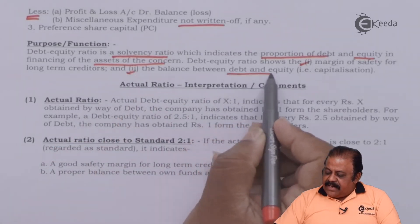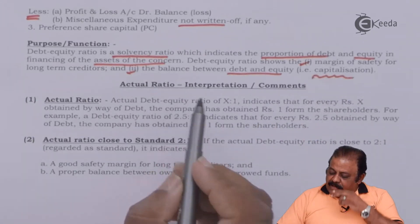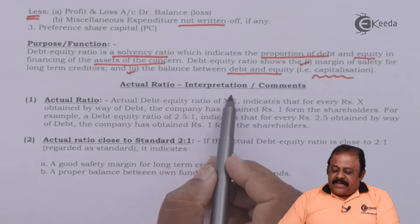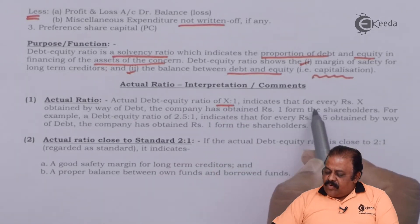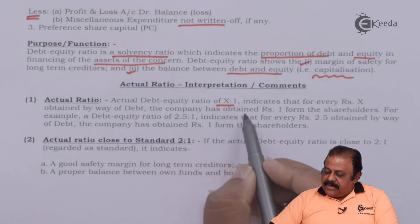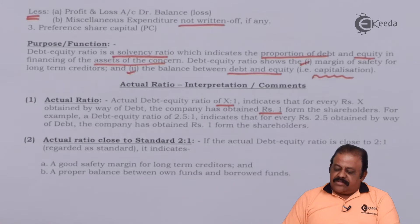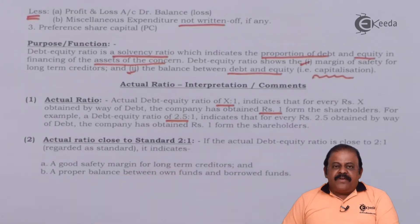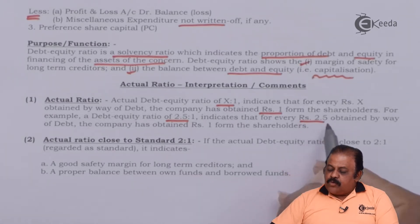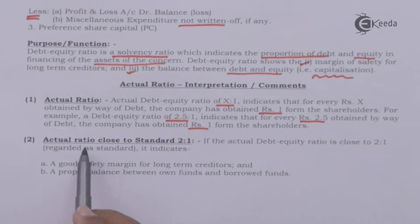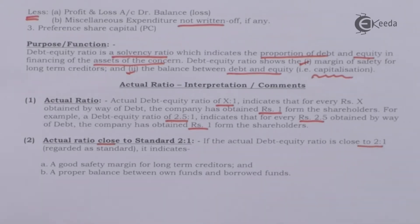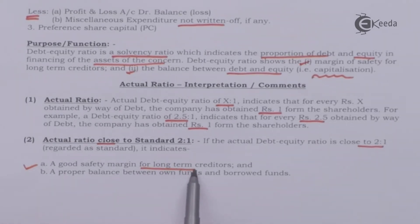Actual ratio and its interpretation: if the debt equity ratio is X is to 1, it indicates that for every rupees X obtained by way of debt, the company has obtained rupees 1 from shareholders. For example, a ratio of 2.5 is to 1 indicates that for every rupees 2.5 obtained by way of debt, the company has obtained rupees 1 from shareholders. If the actual ratio is close to the standard of 2 is to 1, it indicates a good safety margin for long-term creditors and a proper balance between own funds and borrowed funds.